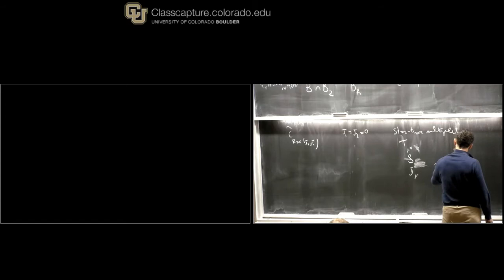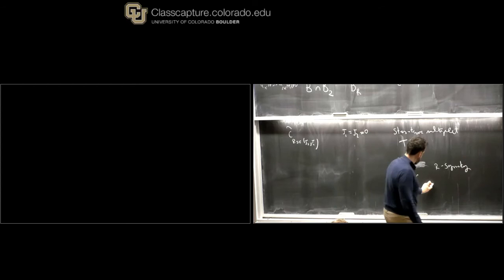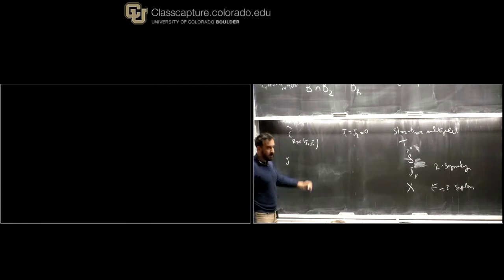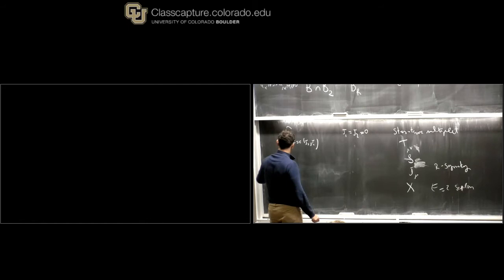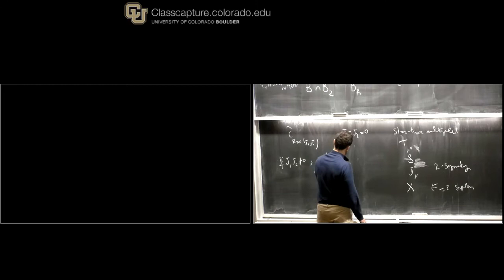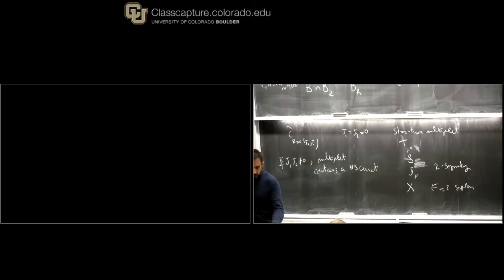These are the R-symmetry currents. In this particular case — a special feature of N equal to two — the bottom component of the multiplet is a scalar of dimension two. On the other hand, multiplets for which one of the spins or both are different from zero necessarily contain a conserved higher spin current. And we disallow it because by the famous result of Maldacena and Zhiboedov, the presence of higher spin currents signals a decoupled free sector in the theory.